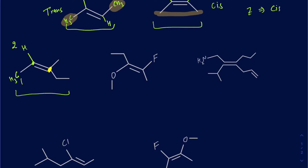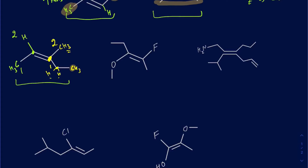On the yellow carbon there's a tie, so you move to the next atom until the tie breaks — similar to what you do with R and S. The top carbon has three hydrogens attached, while the bottom carbon has two hydrogens and another carbon attached. That extra carbon gives the bottom group higher priority, so the bottom one is number one and the top is number two. You can clearly see that the higher priority groups are on the same side, making this a Z isomer.